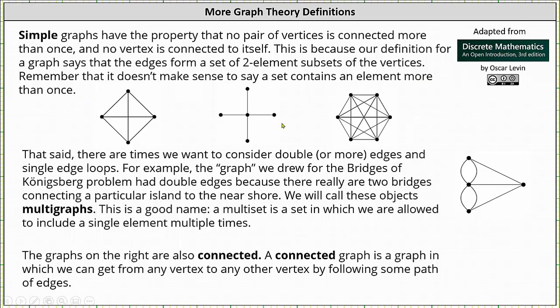The three graphs shown here are all simple graphs. That said, there are times we want to consider double or more edges and single edge loops. For example, the graph we used for the Bridges of Königsberg problem shown here on the right had double edges because there really are two bridges connecting a particular island to the near shore. Notice how we have double edges here at the top and double edges here at the bottom. We call these objects multi-graphs.